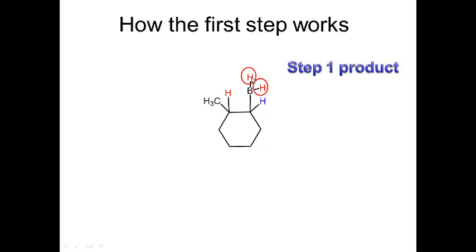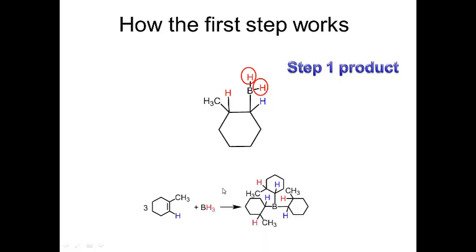You can actually take this alkyl borane and add two more double bonds to it, because there are two more hydrogens available. The stoichiometry is three double bonds for every one BH3, and each double bond picks up an H from the alkyl borane.